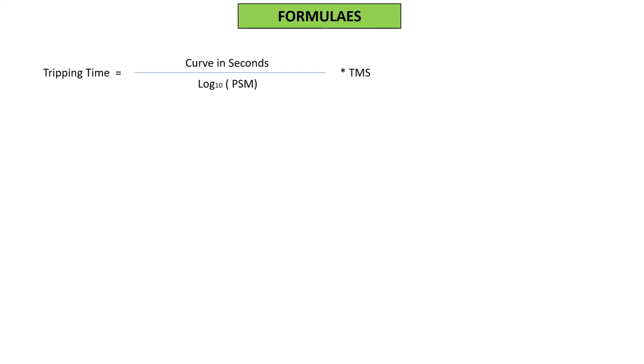Then comes plug setting multiplier (PSM). To calculate this, we need fault current divided by relay pickup value. I am expecting that you know fault current. If you don't know, please mention in the comment box and I will share it separately, otherwise this video will become too lengthy.